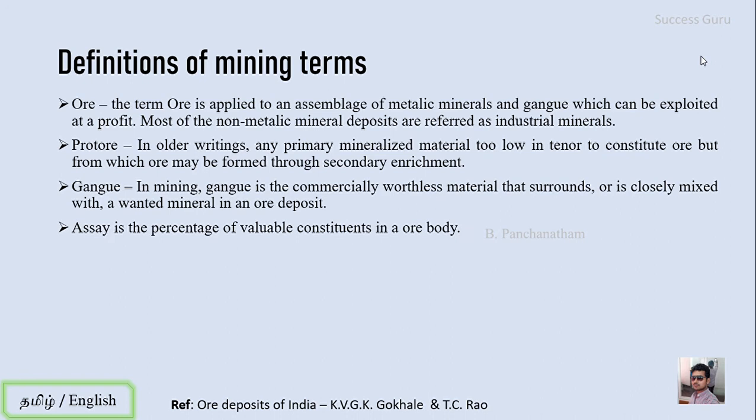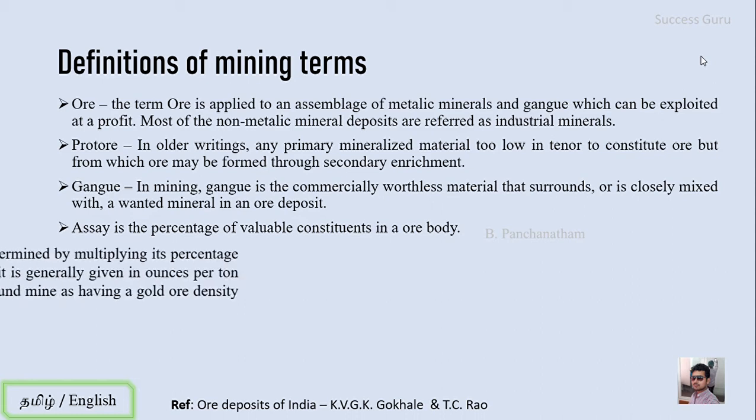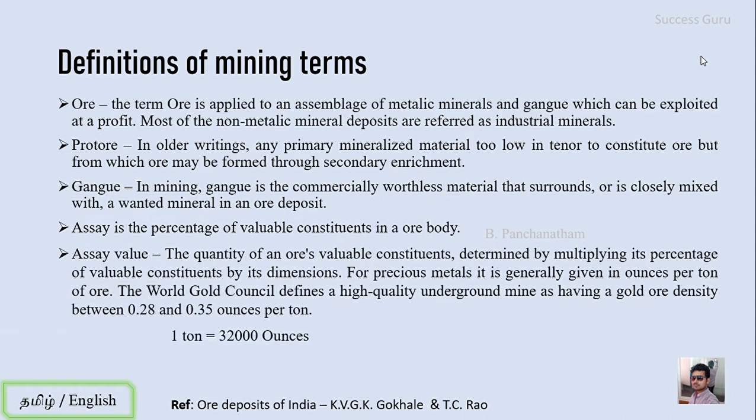The next term is assay — that is, the percentage of valuable constituents in an ore body. And assay value is the quantity of an ore's valuable constituents determined by multiplying its percentage (the assay) and its dimension — that is, its length, breadth, and height — giving us a volume.